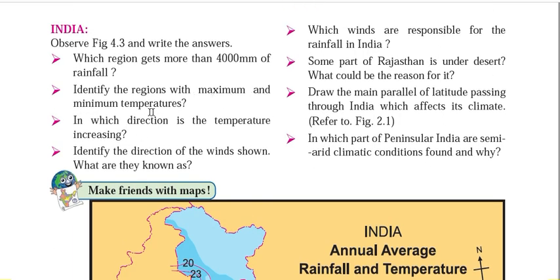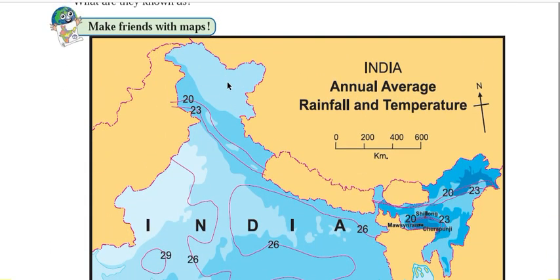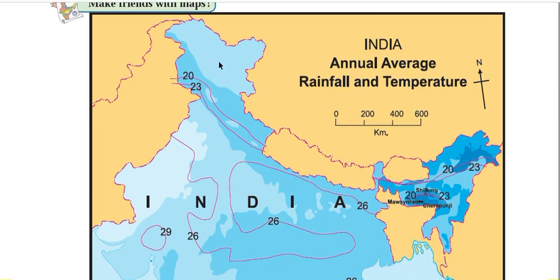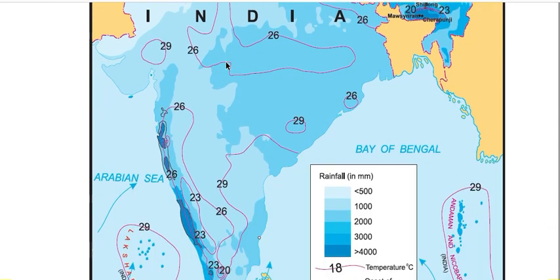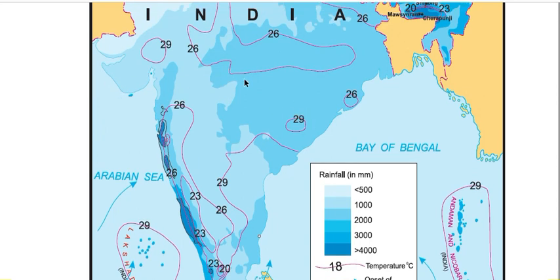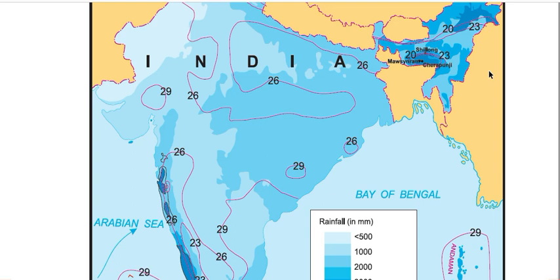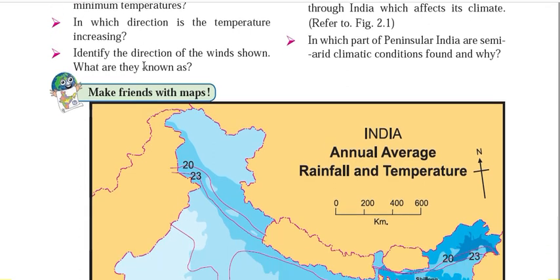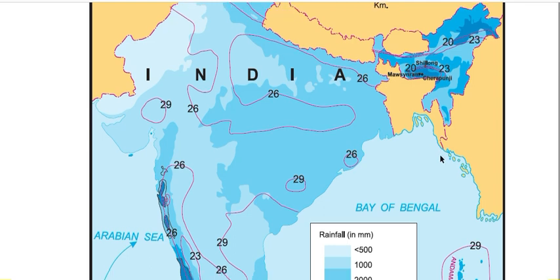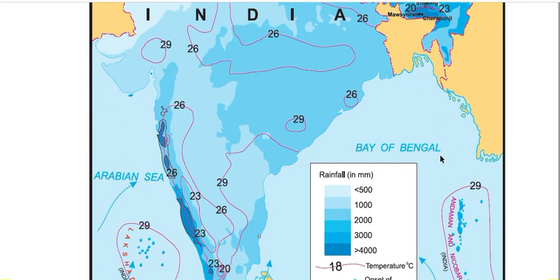The second question: identify the region with maximum and minimum temperature. The minimum temperature region is the northern part of Jammu and Kashmir — the Ladakh region, Karakoram mountains area. In winter, temperature here goes down to minus 55 degrees Celsius in places like Dras and the Kargil sector. Maximum temperature occurs in the central part of India, as the Tropic of Cancer passes through this region. During summer — March, April, May, June — average maximum temperature is around 29 degrees Celsius, though in some pockets it can exceed 45 degrees Celsius.